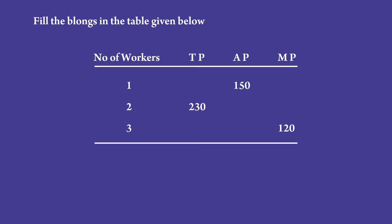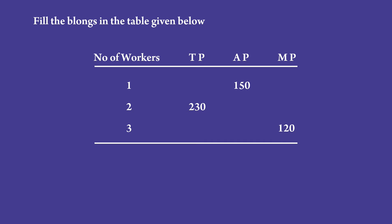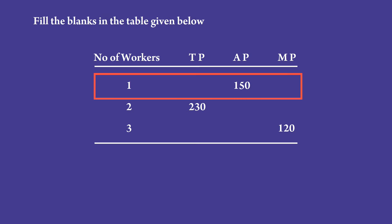Fill the blanks in the table given below. This is a 3 mark question of the 2017 board examination. Let us fill the first row. In this row, average product is given. We have to find total product and marginal product.